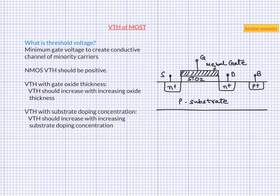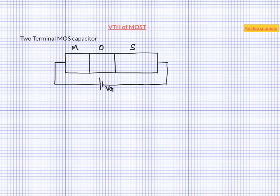Now we would derive a more quantitative expression of threshold voltage, but whatever that expression is, it should also support these two observations. In order to derive the basic expression of threshold voltage we do not really need the whole MOS transistor. We can actually work with a simpler structure called a two terminal MOS capacitor. Here I have rotated the structure by 90 degrees.